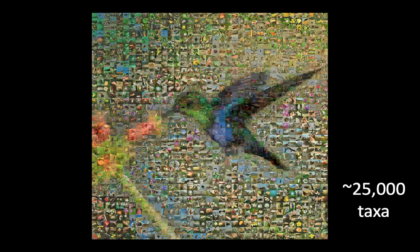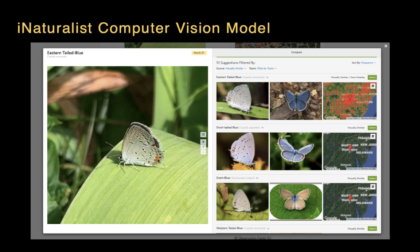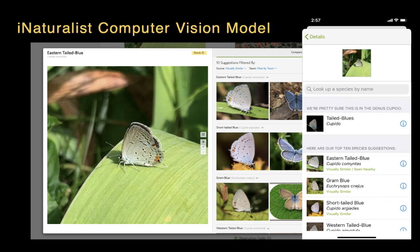With those millions of photos, iNaturalist has trained a computer vision model using machine learning to suggest species that are visually similar to the image represented. There are about 25,000 taxa currently available for suggestion in our computer vision model. It takes a few months to train and we try to get a new model out a couple times a year. Here's what it looks like — this is a butterfly I observed in my front yard in DC, and the visually similar suggestions show other species that look quite similar. This feature is available both in the app and on the web.